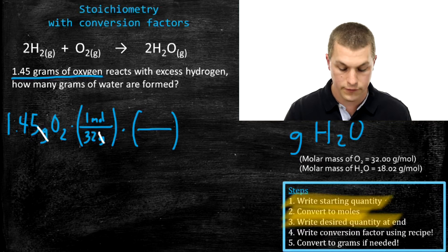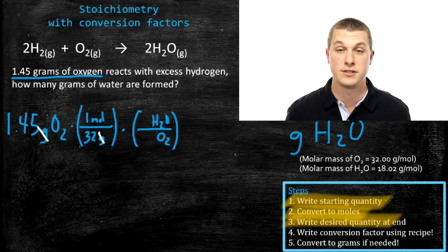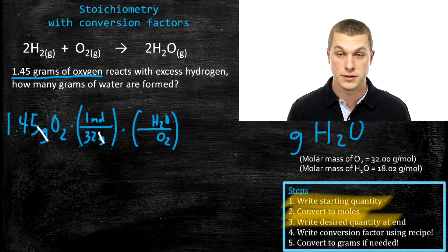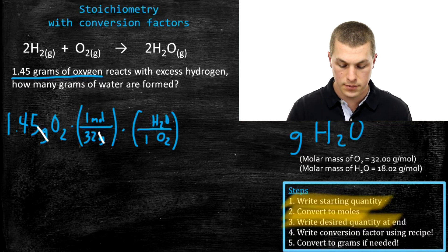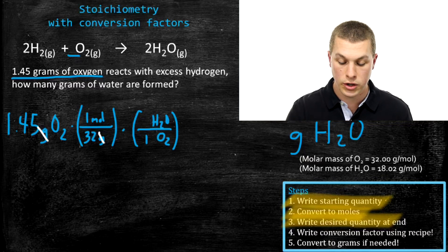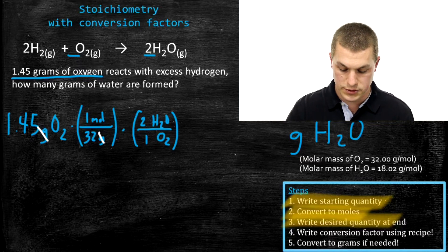We're going from oxygen to water, so we cancel out oxygen and bring in H₂O. These conversion factors are just ratios in terms of moles. Next to oxygen we write 1, because there's an implied one in front of oxygen in the balanced equation, and next to water we write 2. That gets us to moles of water.